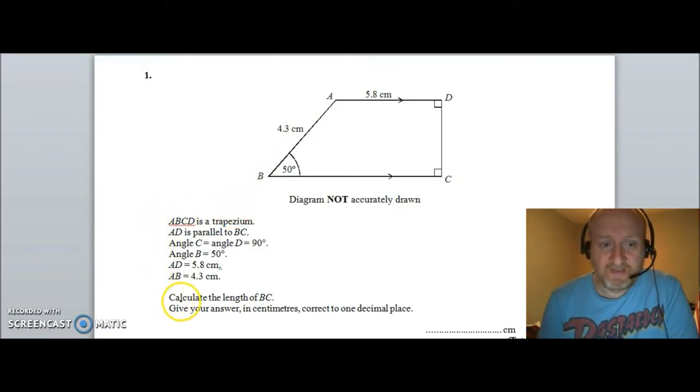Firstly in this question there is a whole load of information relating to the diagram and we've also told within the question specifically that they want the length BC and also and this is important to get because people often make the mistake they don't look at this bit here which is we want the answer correct to one decimal place only.